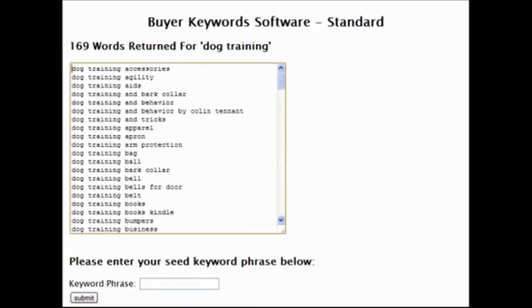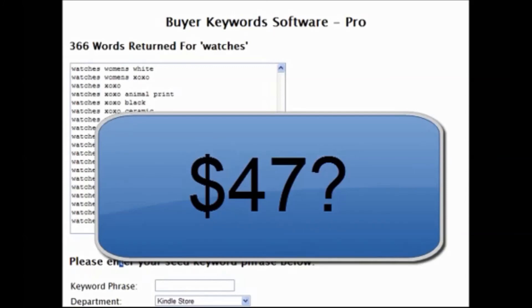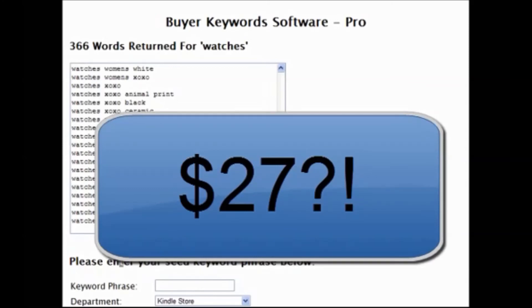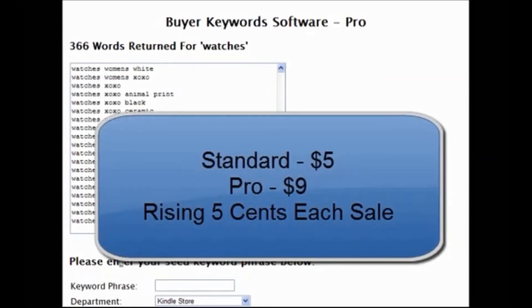To recap: the standard version goes one level deep and searches across all departments. The pro version lets you choose the department and go up to eight levels deep, though I would advise not going over two levels deep. There are a couple of similar tools out there sold for up to $47, but I really want to make this a no-brainer. The standard version starts at just $5 and rises by five cents for each sale, and the pro version starts at $9 and rises by five cents for each sale.